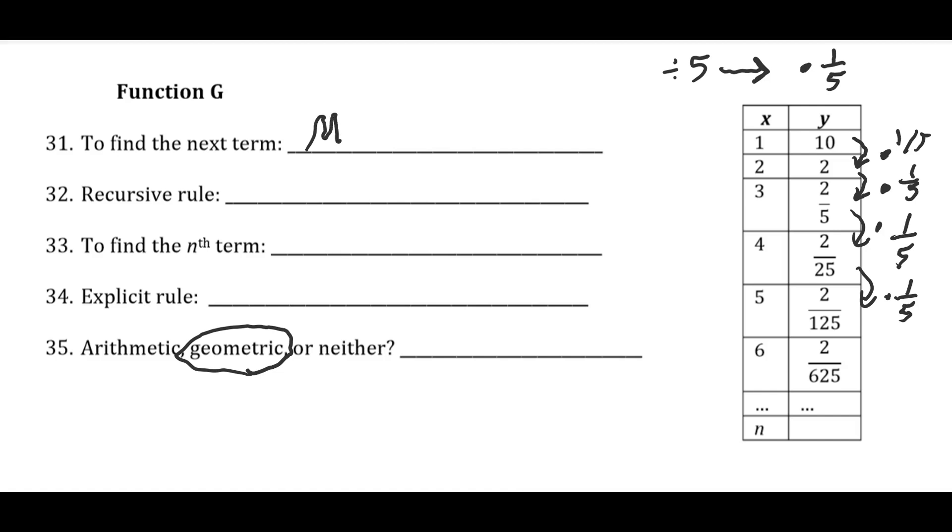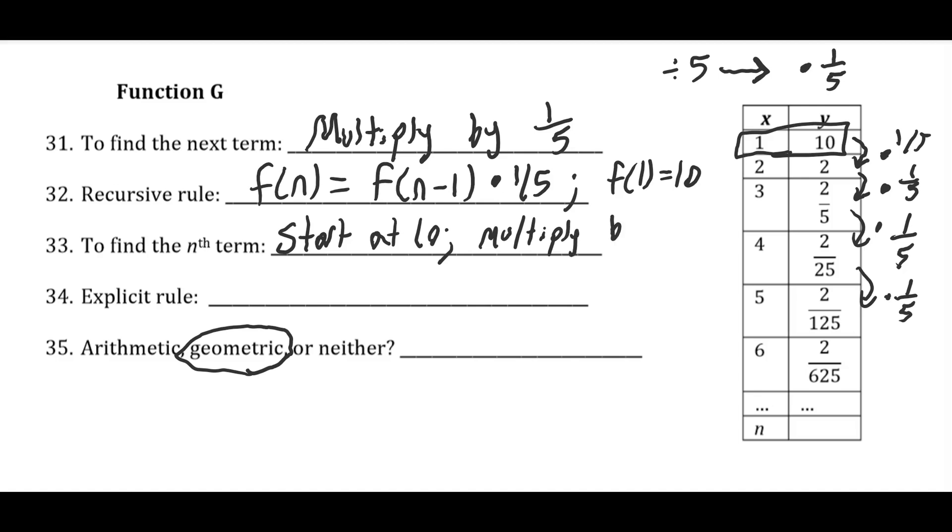So to find the next term, we just need to multiply by 1 fifth. So our recursive rule using MVP style notation is going to be f of n equals f of n minus 1 times 1 fifth. And again, we're starting with the first term, f of 1 being 10. So we know that because of that, when we multiply by 1 fifth, we're going to need to do it n minus 1 times. So start at 10 and multiply by 1 fifth n minus 1 times.